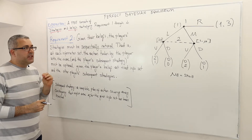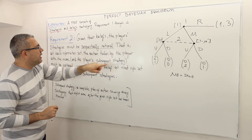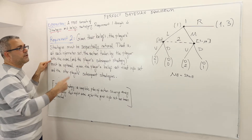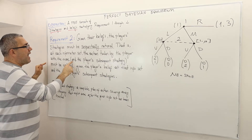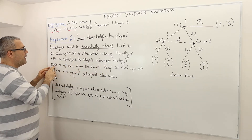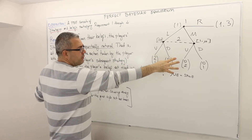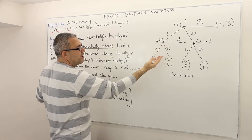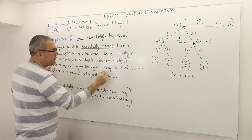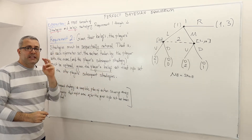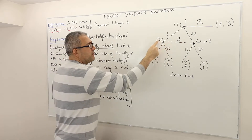But what does it really mean? At each information set, the action taken by the player with the move — for example, in this info set it's the second player because she has the move — and the player's subsequent strategy, meaning the continuation strategy, must be optimal given the player's belief.